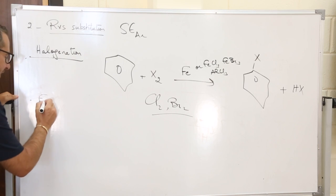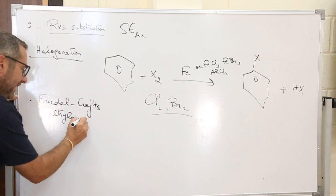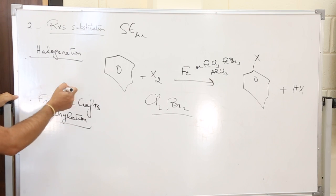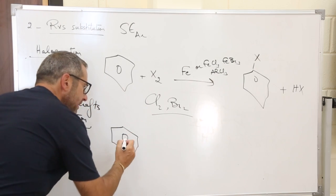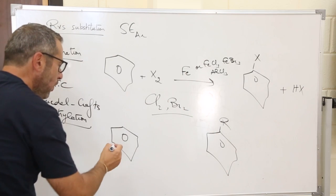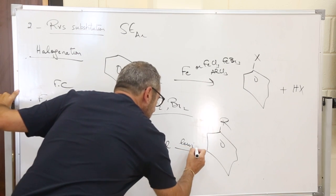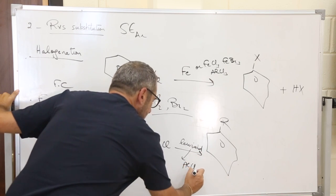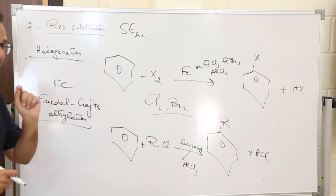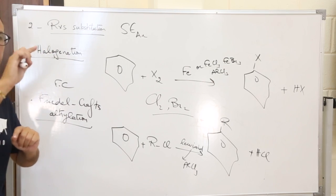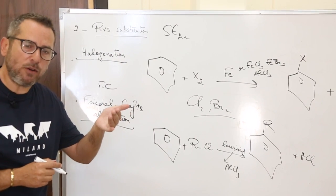Next is the reaction of Friedel-Crafts. Friedel and Crafts are two chemists who found two reactions on benzene. The first is called Friedel-Crafts alkylation (F-C alkylation). You replace the H of benzene by a group R (alkyl). You use an alkyl halide RCl with a Lewis acid like AlCl3, and you obtain benzene-R plus HCl. A Lewis acid is an acid having a free orbital capable of receiving a free pair of electrons; the substance that gives electrons is a Lewis base.